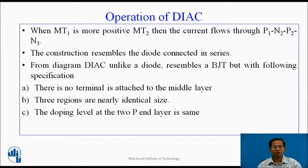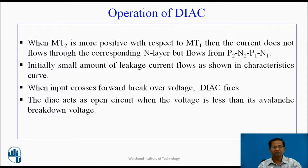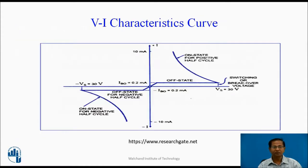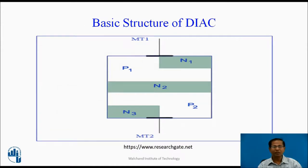For third quadrant operation, when MT1 is more positive than MT2, the current flows through P1, N1, P2, N3. P1, N2 is forward biased, P2, N3 is forward biased, and N2, P2 is reverse biased. When the input crosses the break-over voltage, N2-P2 breaks down and conduction takes place, and the current flows through P1, N2, P2, N3.